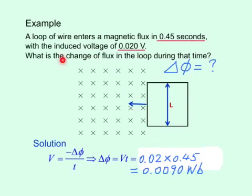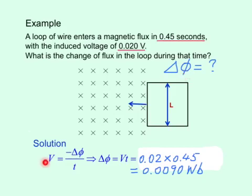In this example, a loop of wire is being moved into a magnetic field, and you are asked to calculate the change of flux, delta phi. You rearrange the formula, drop in the negative sign, and get V times T. The final answer is 0.0090 Weber.